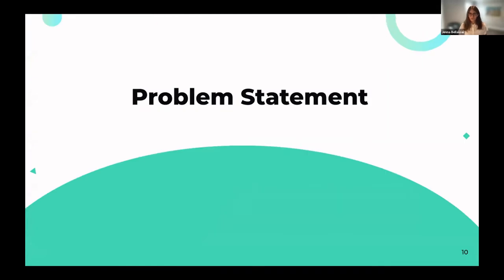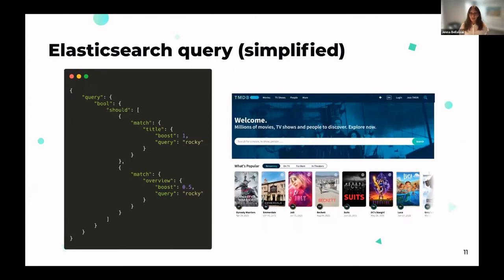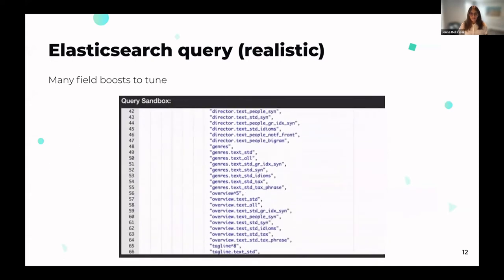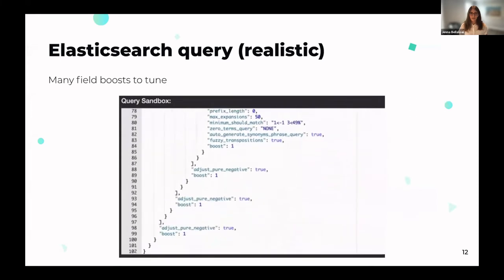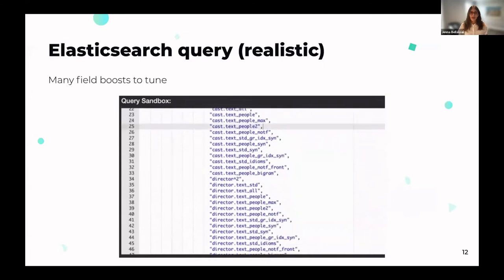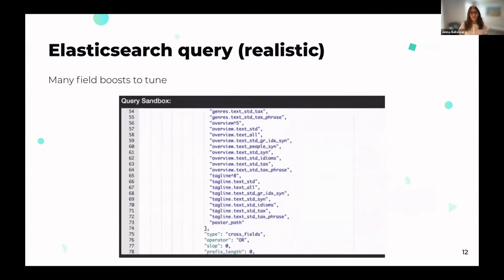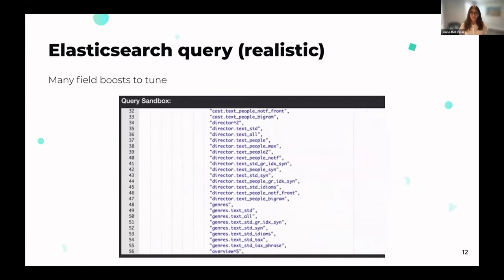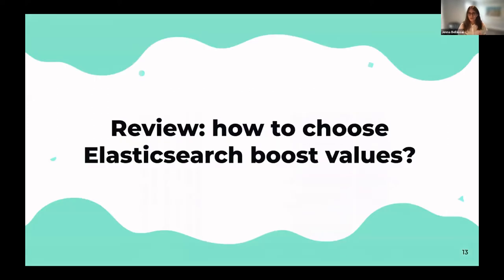Here on the left you can see a simple Elasticsearch query using the movie database. We're trying to match on the title and overview, the query is 'rocky,' the title has a boost of one, and the overview has a boost of 0.5. In production things get more complex — here's another Elasticsearch query where we've added quite a few analyzed fields to match against. As you add analyzed fields, you may want a specific boost for each one, and this leads to a problem where you have many different field boosts to tune.